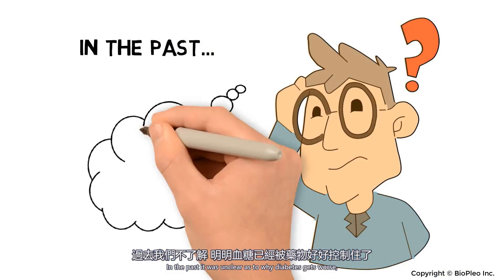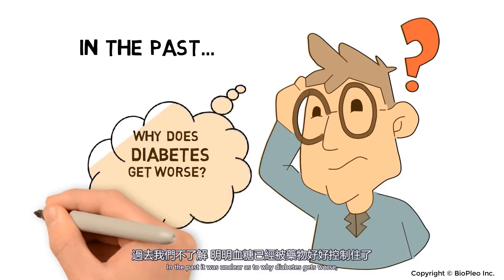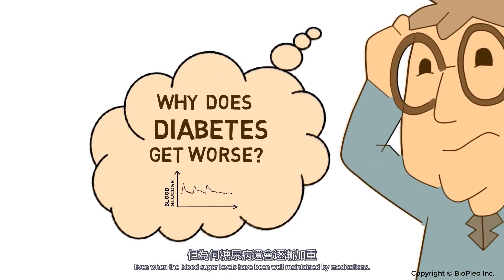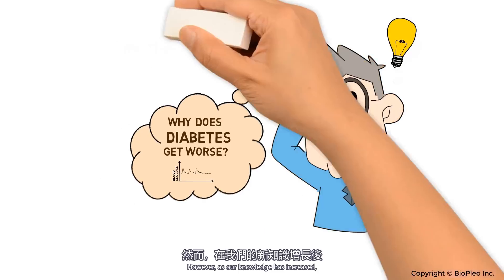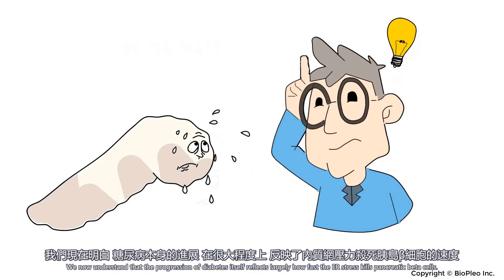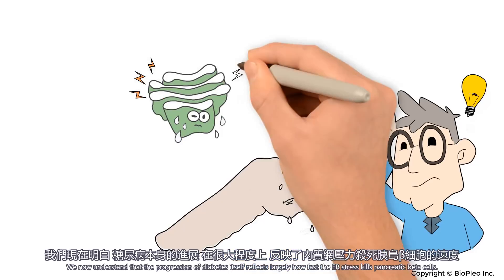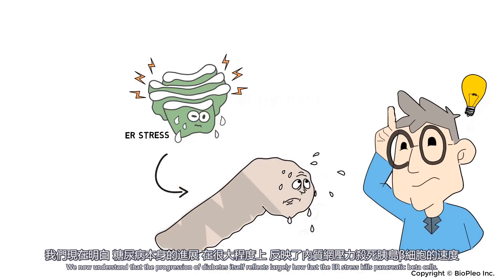In the past, it was unclear as to why diabetes gets worse even when the blood sugar levels have been well maintained by medications. However, as our knowledge has increased, we now understand that the progression of diabetes itself reflects largely how fast the ER stress kills pancreatic beta cells.